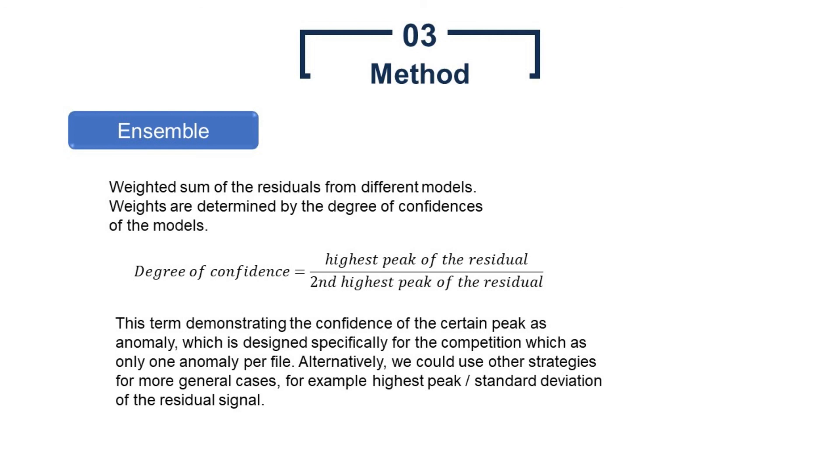After the modeling module, we need to leverage the advantages from different models and combine all these results into the final prediction. As we mentioned, at this stage, each model produces a time series residual. We used weighted sum for the ensemble, and weights are determined by the degree of confidence of the models which is defined as the value of the highest peak of the residual divided by the value of the second highest peak of the residual. This value demonstrating the confidence of the certain peak as an anomaly, which is designed specifically for the competition as there is only one anomaly per file. Alternatively, we could use other strategies for more general cases, for example, the highest peak divided by the standard deviation of the residual signal. This residual ensemble strategy solves the problem of how to take the advantage of different types of models and produce a more accurate and robust result.